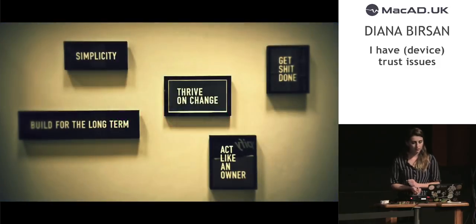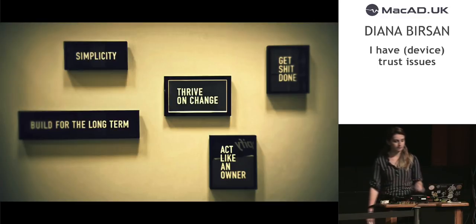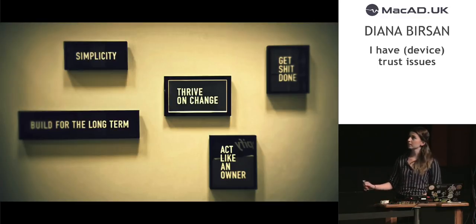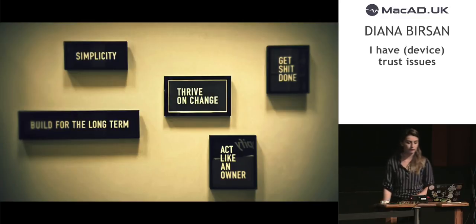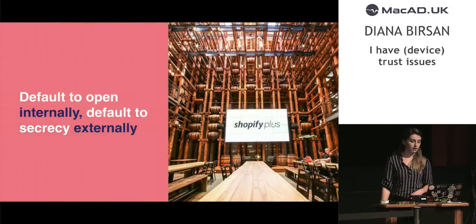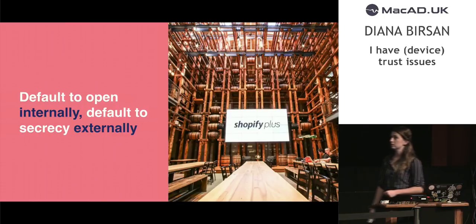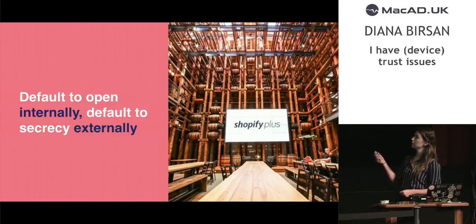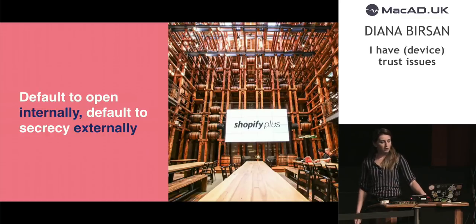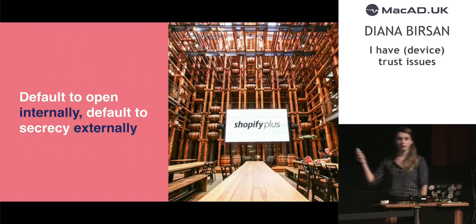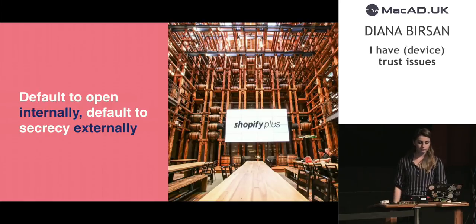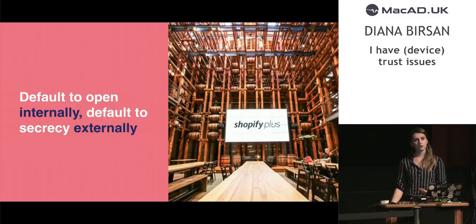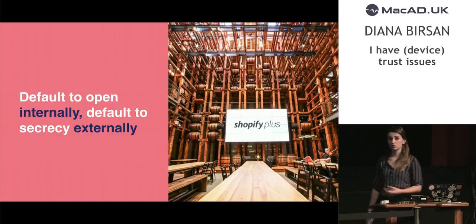With this high level of trust and autonomy, it feeds directly into our five culture values. One of them is definitely get shit done. What I really want to talk about is the value our security team tries to protect: default to open internally and secrecy externally. The idea is that we want information to flow freely at all levels. Rather than start from a point where we choose what to share, we start from a point where we choose what not to share.